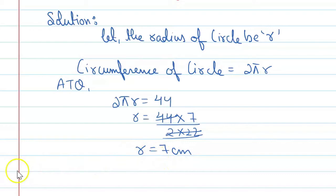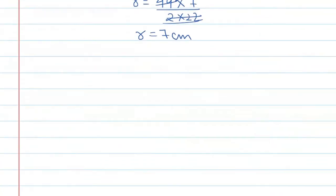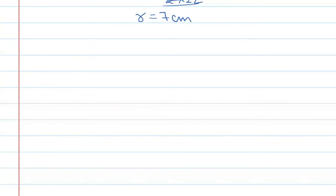Now we can find the area of a quadrant. So to find area of a quadrant, what do we do? We apply the formula. That is, area of a quadrant is equal to 1 by 4 of pi r square.